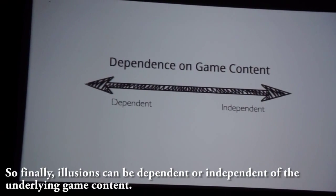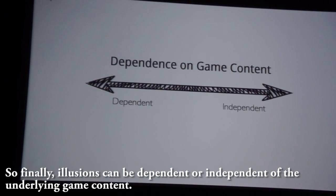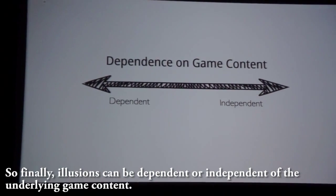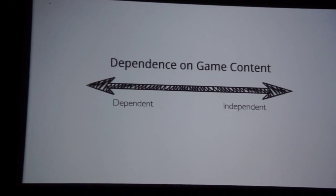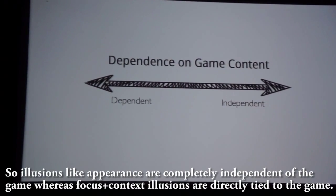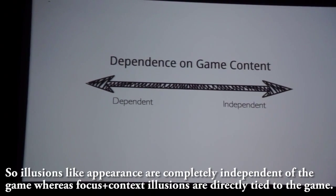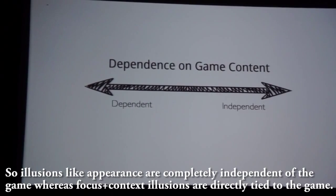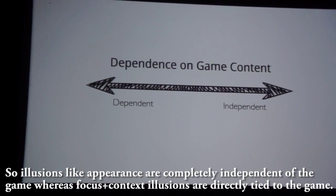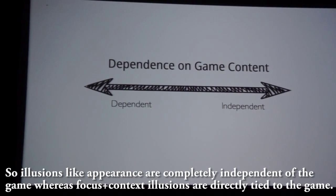Illusions can be dependent or independent of the underlying game content. Illusions like appearance are completely independent of the game, whereas focus plus context illusions are directly tied to the game content.